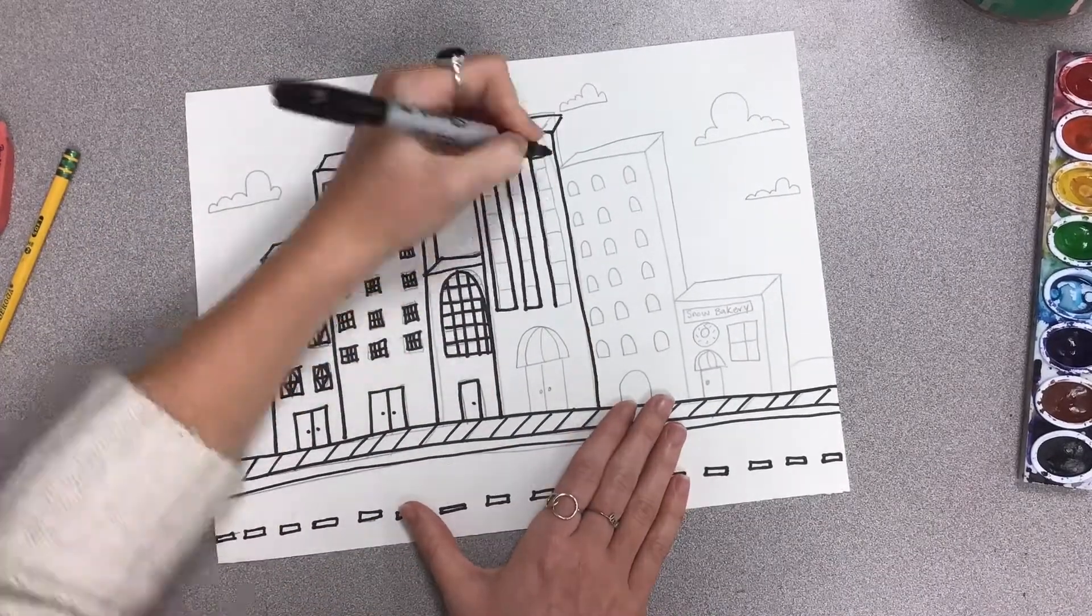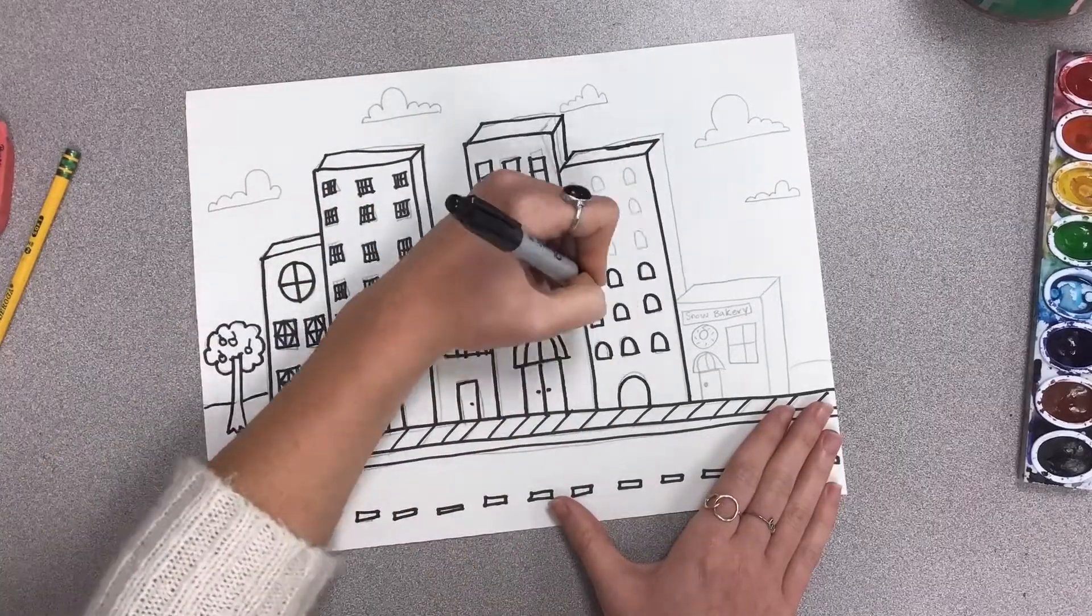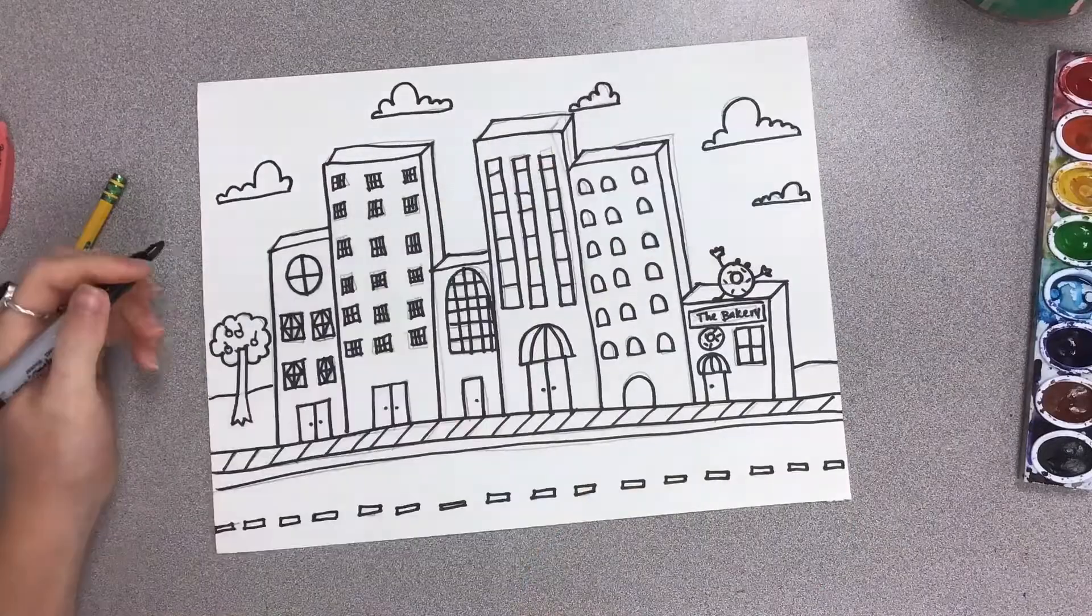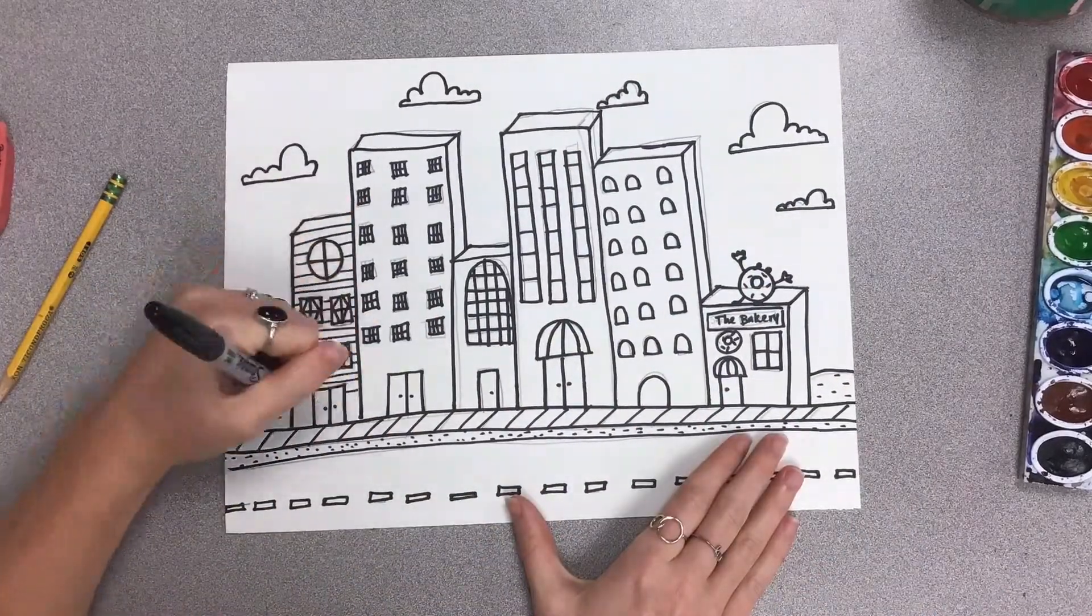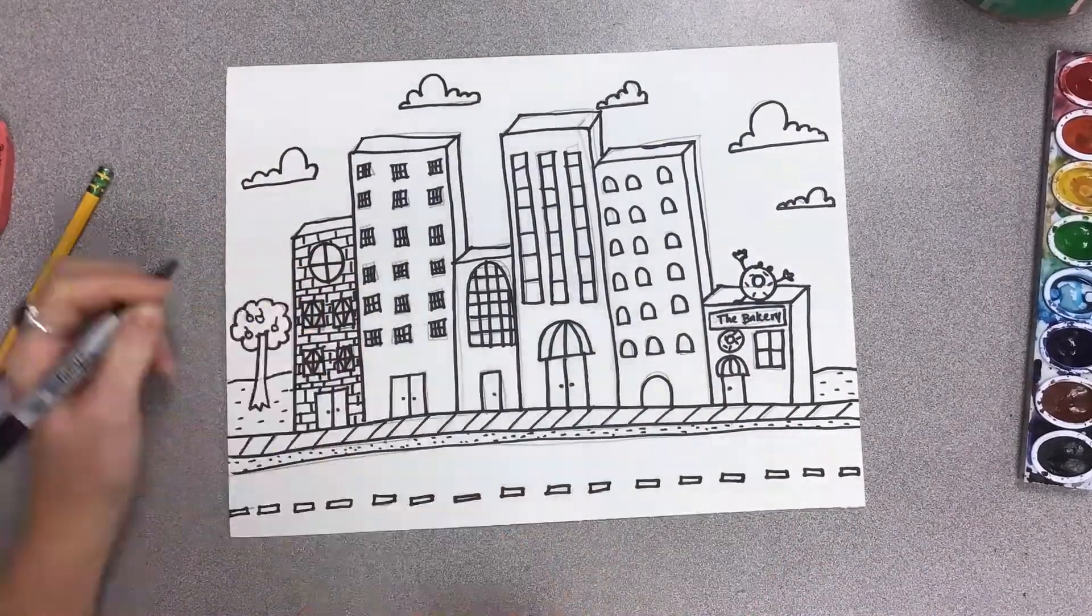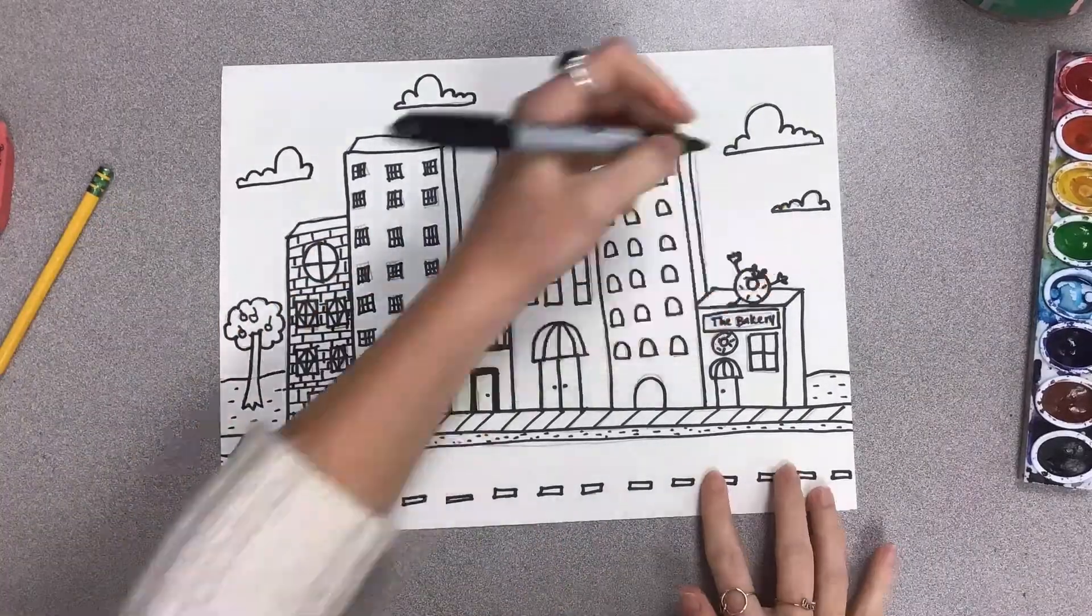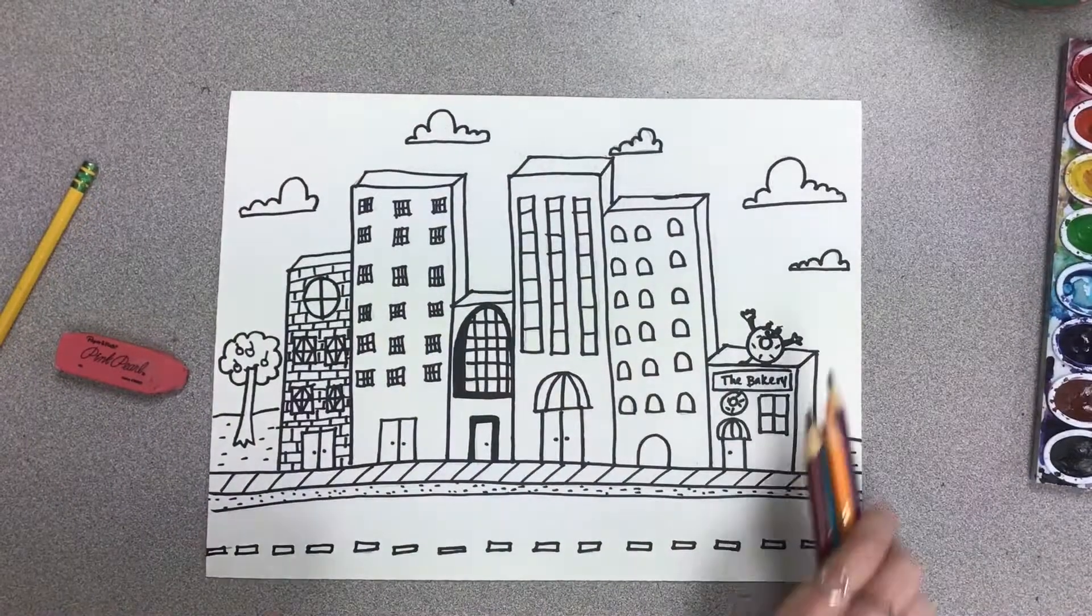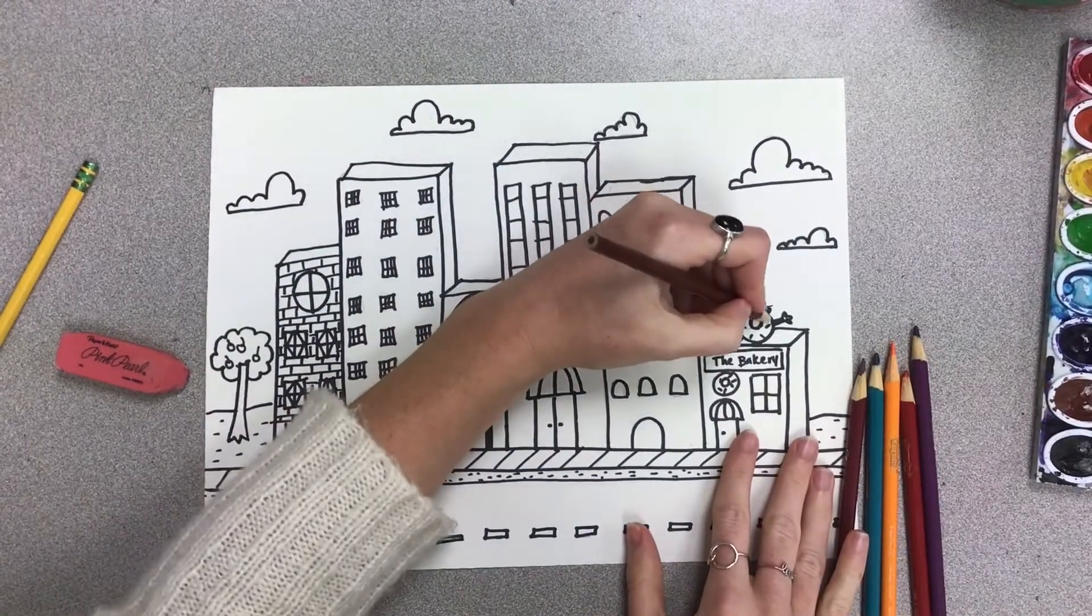And once you have all that, you're going to go over it with a black marker, trace around your pencil lines, and of course erase all your pencil lines. Sometimes I change my ideas as I'm going. Sometimes I add on with bricks and adding different details. That's okay, you can always add on to your project.